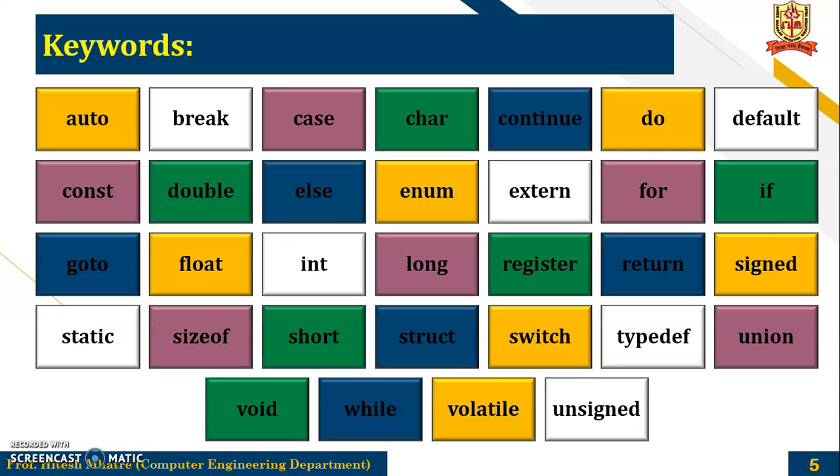So these are the keywords: auto, break, case, char, continue, do, default, const, double, else, enum, extern, for, if, goto, float, int, long, register, return, signed, static, sizeof, short, struct, switch, typedef, union, void, while, volatile and unsigned.